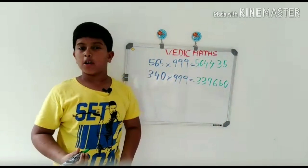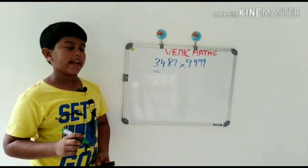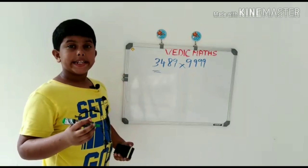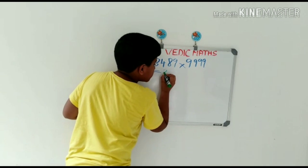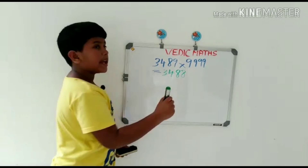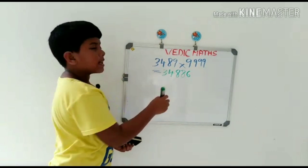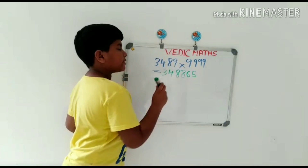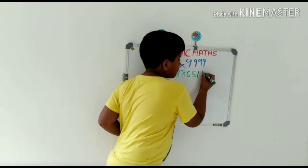Now let's move to a four-digit problem: 3,489 multiplied by 9999. First, we should write the number 1 less than 3,489, that is 3488. What number added to 3 to get 9? That's 6. What number added to 4 to get 9? That's 5. What number added to 8 to get 9? That's 1. What number added to 8 to get 9? That's 1. Here's the answer: 34886511.